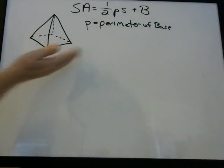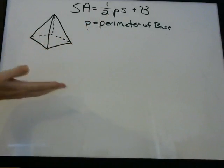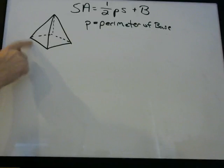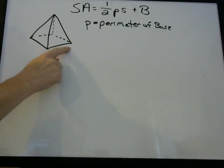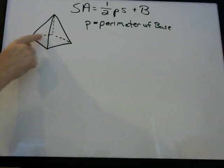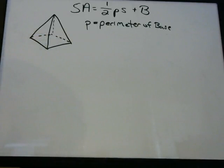The base is this bottom thing that the pyramid is sitting on. How do you find the perimeter of that? All you do is add up the sides. Since each of the sides is going to have equal length, you can take one side and multiply it by four.